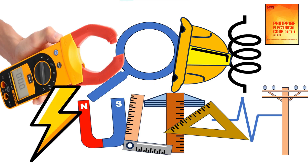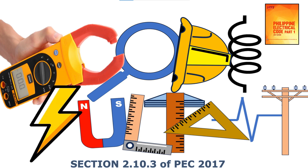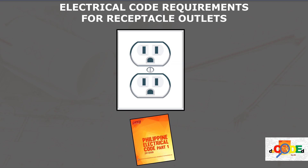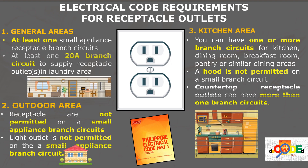Hello, fellow electrical practitioners, electricians, and future engineers. This video will discuss the required outlets for dwelling units covered under section 2.10.3 of the 2017 Philippine Electrical Code. Our Electrical Code has many provisions concerning the general areas of residential buildings from inside and outside. Learning these provisions pertaining to residential units is very important because these provisions are the foundation for all residential wiring.